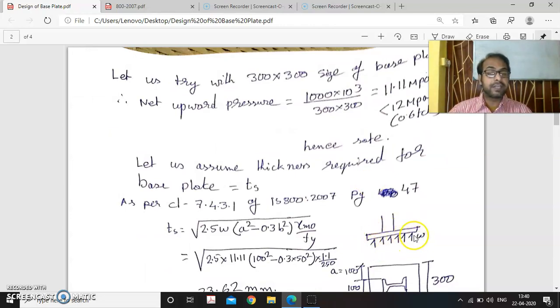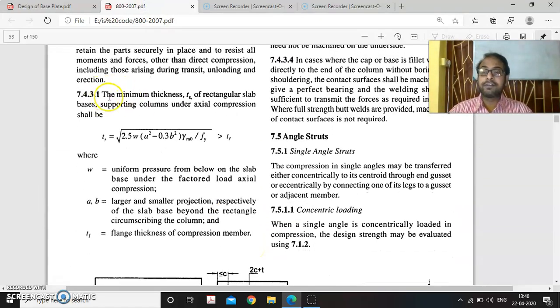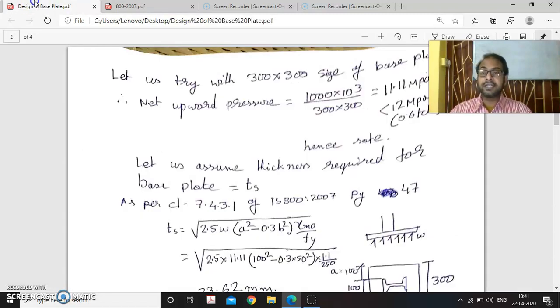This permissible bearing pressure will give an upward pressure on the base plate, and this portion will behave as a cantilever to deform. So we want to find out what should be the thickness of the base plate to resist this deformation. We will refer to clause 7.4.3.1 on page 47. The maximum thickness Ts of rectangular slab base supporting column under axial compression shall be given by this formula. It should not be less than the thickness of the flange of the column. W is the upward pressure, A and B are the larger and smaller projection respectively of the slab base beyond the rectangular circumscribing of column.